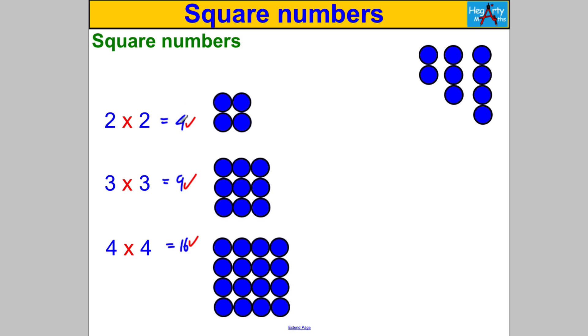So a square number is the result of a whole number multiplied by the same whole number like 2 multiplied by 2 which is 4, 3 multiplied by 3 which is 9, 4 multiplied by 4 which is 16. The next one will be 5 multiplied by 5 which would be 25, and we're missing 1 multiplied by 1 which equals 1.